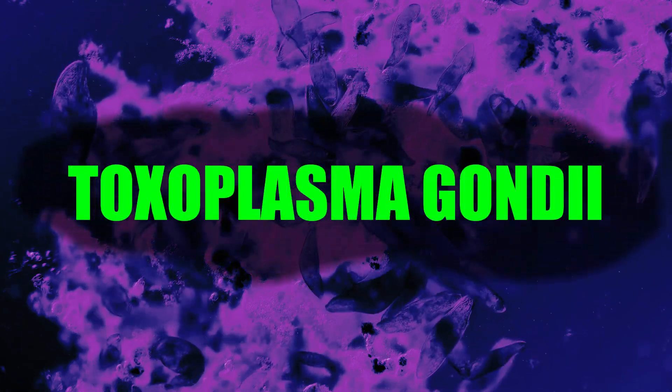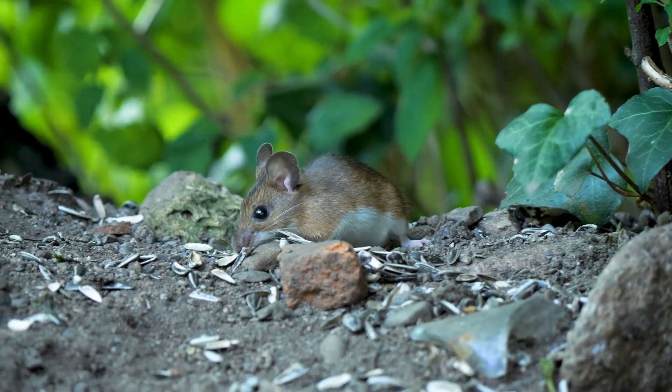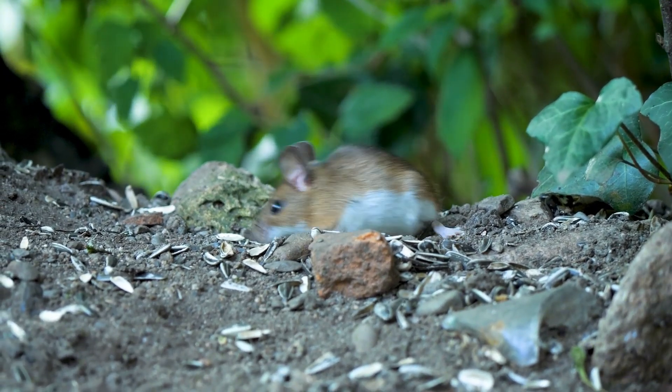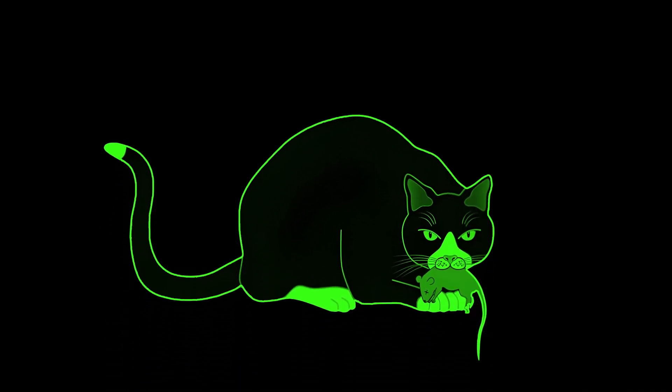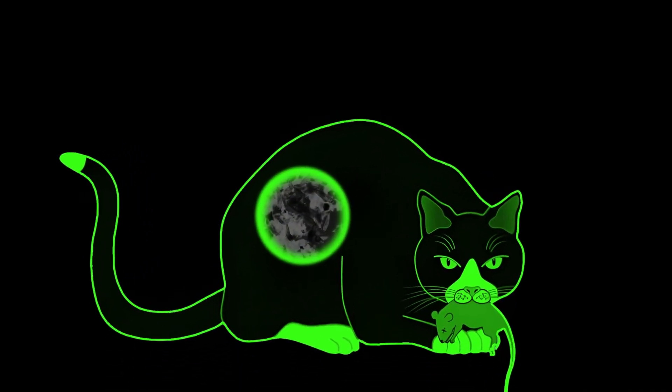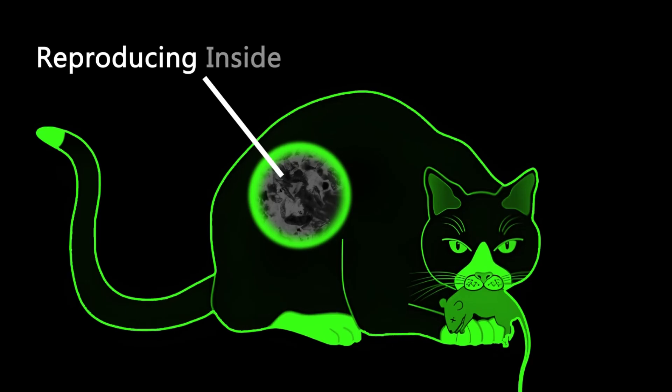Right now, there's a microscopic parasite called Toxoplasma gondii rewiring the brains of infected mice, making them sexually attracted to cat urine. When the cat devours the fearless mouse, the parasite completes its mission, which is reproducing inside cats.